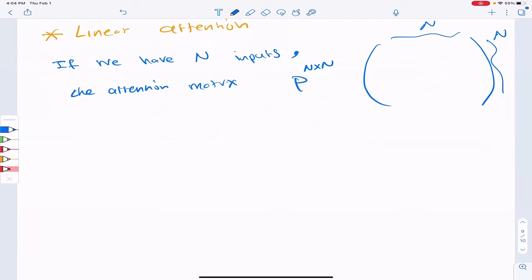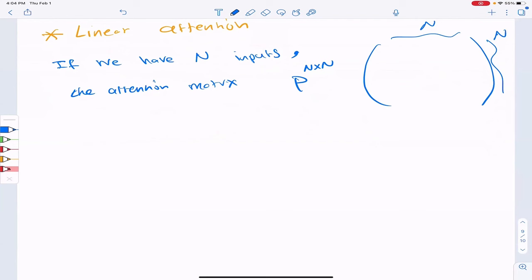So the question is, how can we make this computation linear in n? So that's the idea of linear attention. Because in that case, we can scale up to larger input sizes.